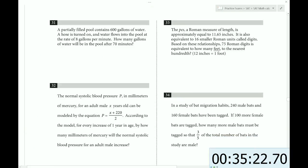Okay, so we're into the grid-ins. A partially filled pool contains 600 gallons of water. A hose is turned on and water flows into the pool at a rate of 8 gallons per minute. How many gallons of water will be in the pool after 70 minutes? So you have 8 gallons per minute times 70 minutes. We're multiplying them together so that the minutes will cancel out. Eight times seven is 56, so that's 560 gallons that are added to the pool. But there's already 600 gallons in the pool, so that's a total of 1160 gallons.